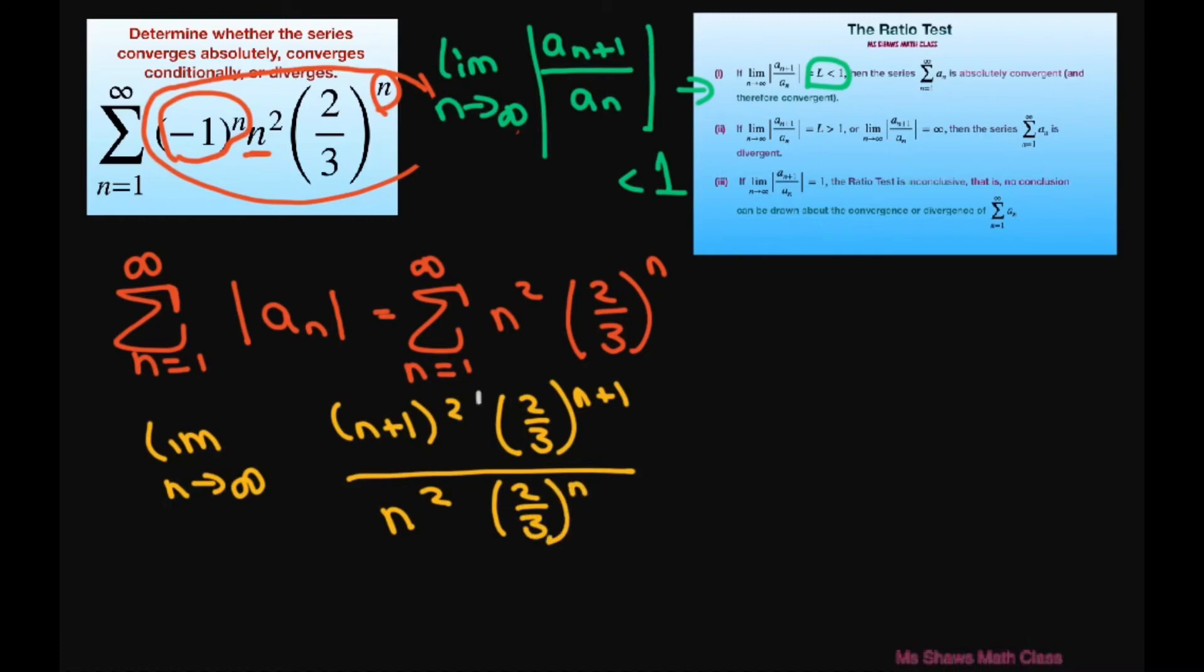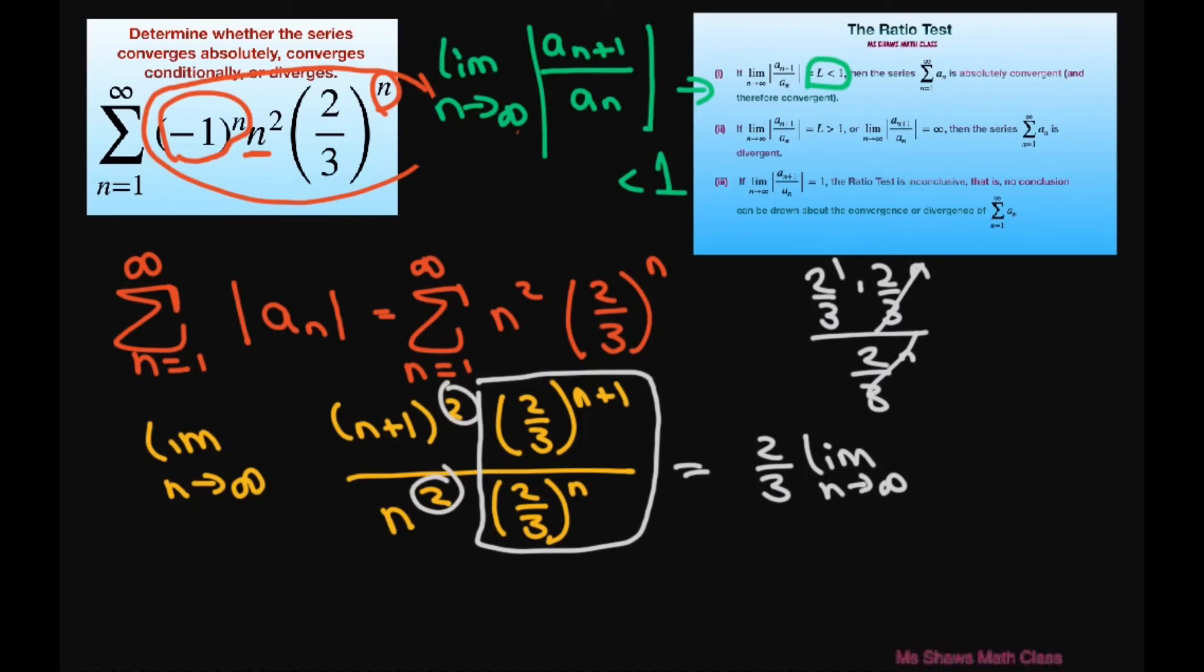Now looking at these two pieces, this is just going to be 2 thirds because this can be written as 2 thirds times 2 thirds to the n divided by 2 thirds to the n. So that's just 2 thirds to the first power. We can pull that out and then do the limit as n approaches infinity. Since these are both squares, we can write this as n plus 1 divided by n squared.